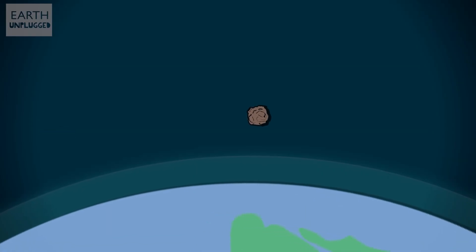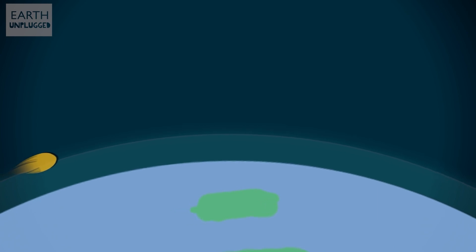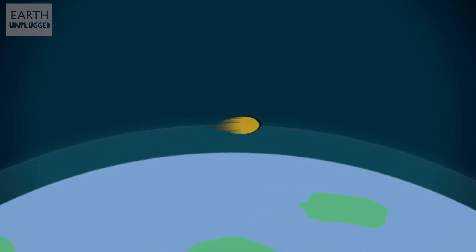A meteoroid is just a small asteroid less than 10 meters across, and if and when it enters the Earth's atmosphere, it burns up, leaving a streak of light, and this is known as a meteor.